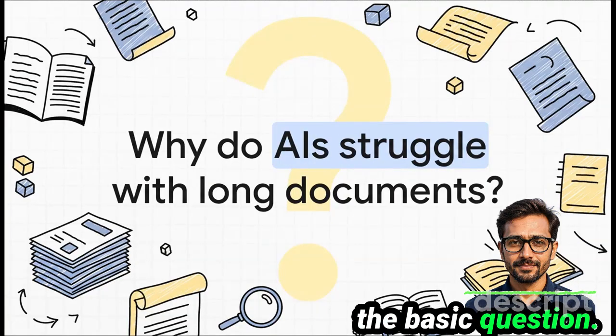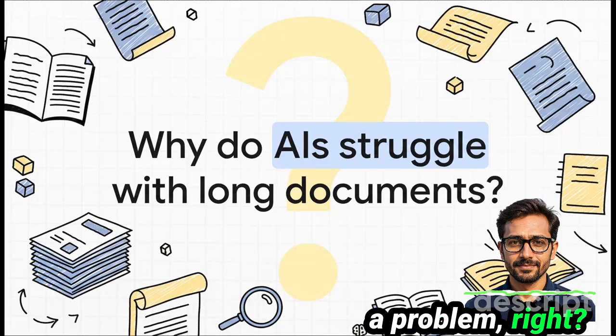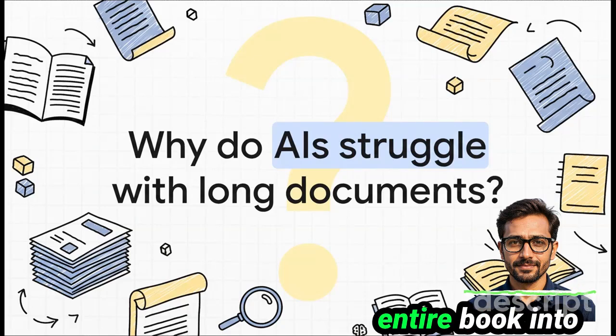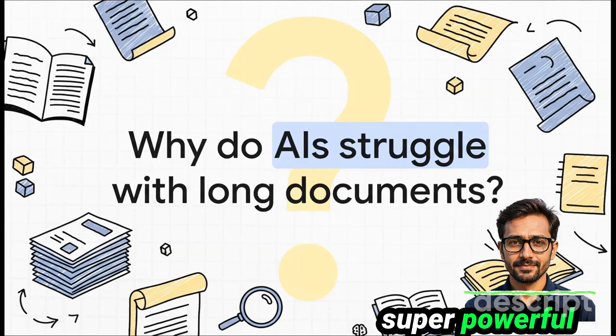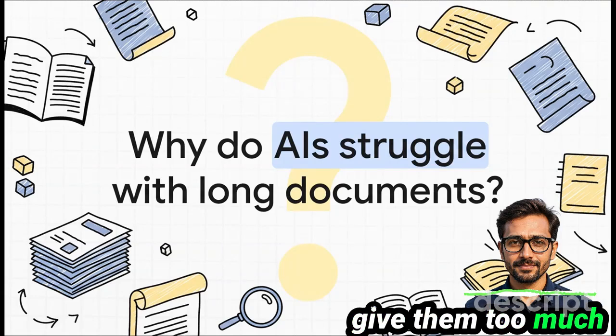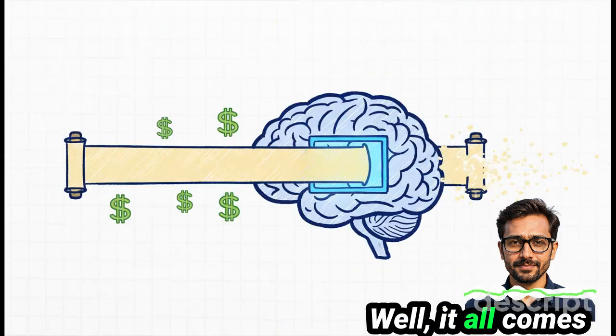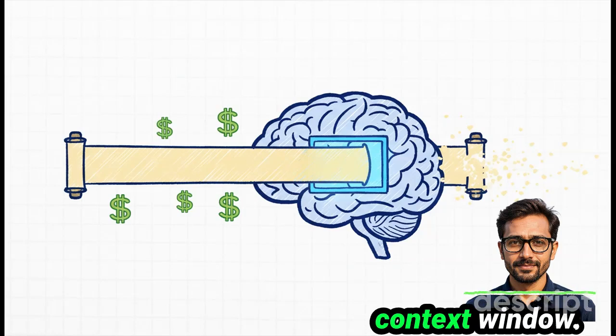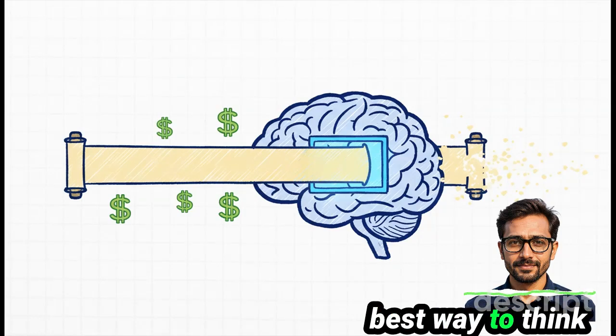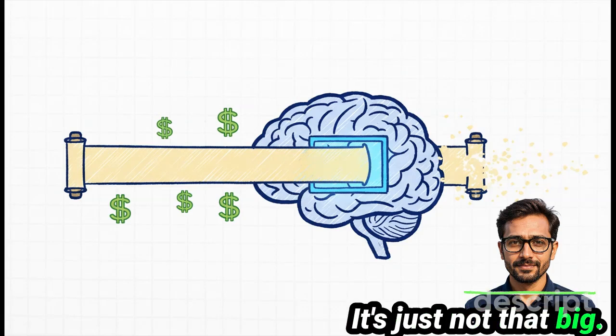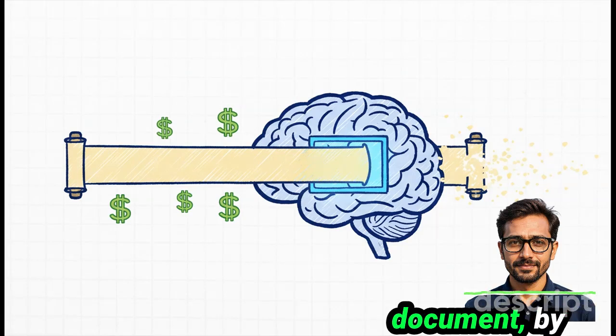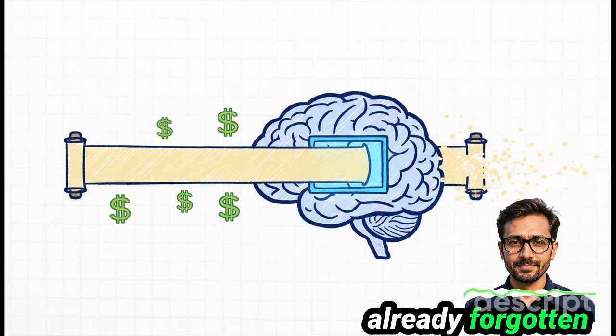So let's start with the basic question. Why is this even a problem? I mean, why can't you just dump an entire book into an AI and have a conversation about it? Why do even these super powerful models kind of choke when you give them too much to read at once? Well, it all comes down to something called the context window. And honestly, the best way to think about it is like the AI's short-term memory. It's just not that big. So when you feed it a really long document, by the time it gets to the end, it's already forgotten the beginning.